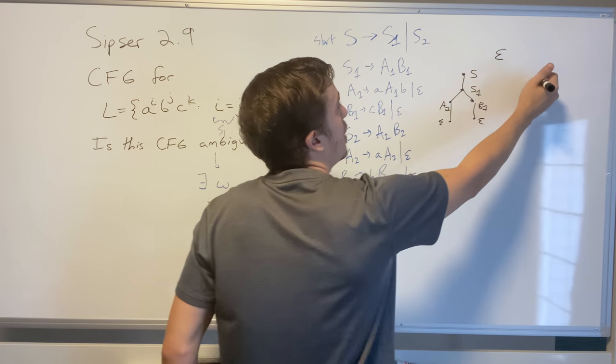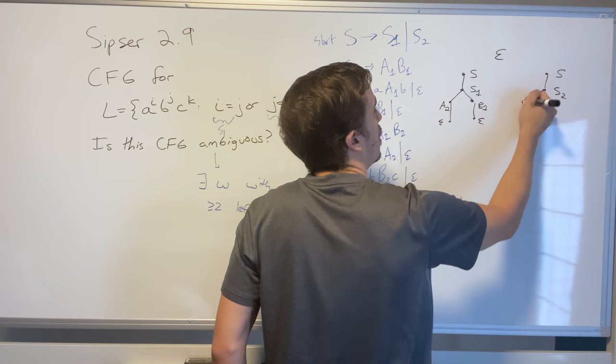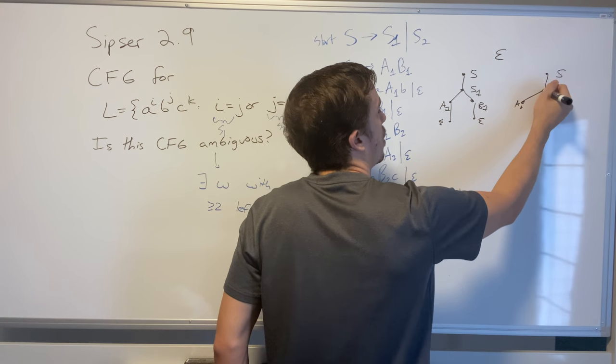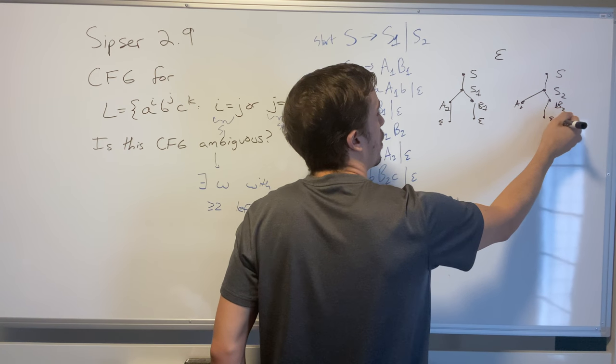If we went down the other side, we would have S up here going down to S2, and then A2, B2, and all of those would go to empty.